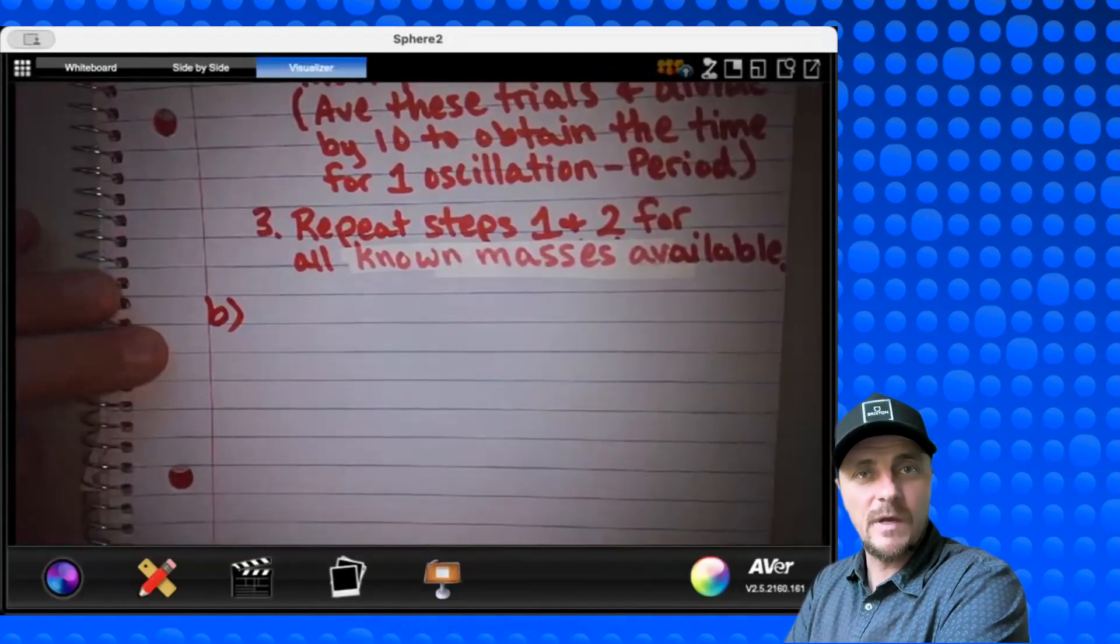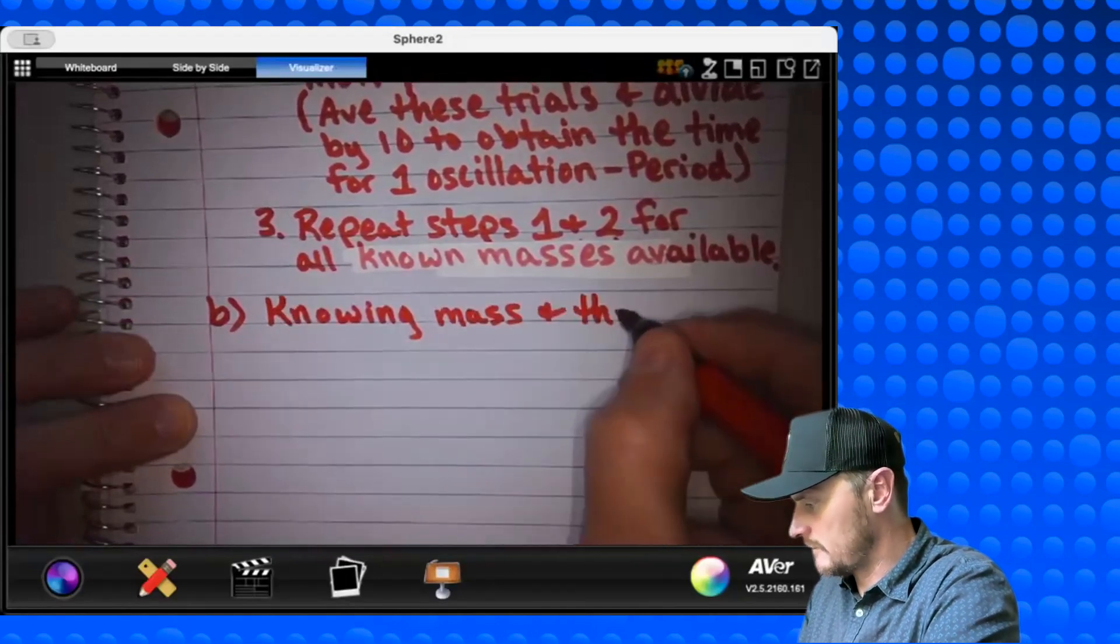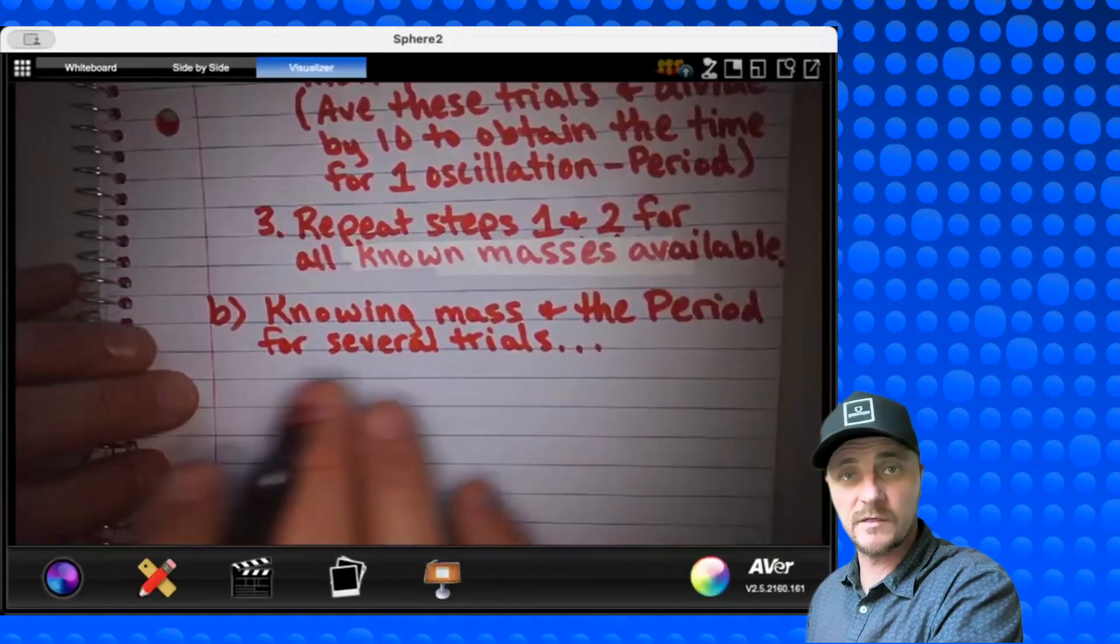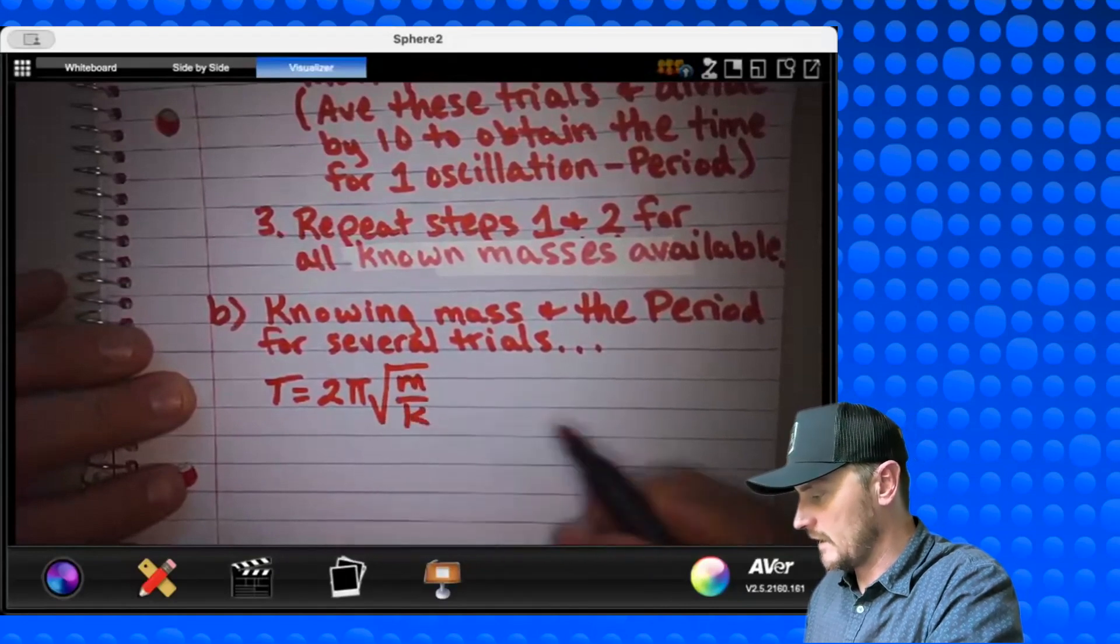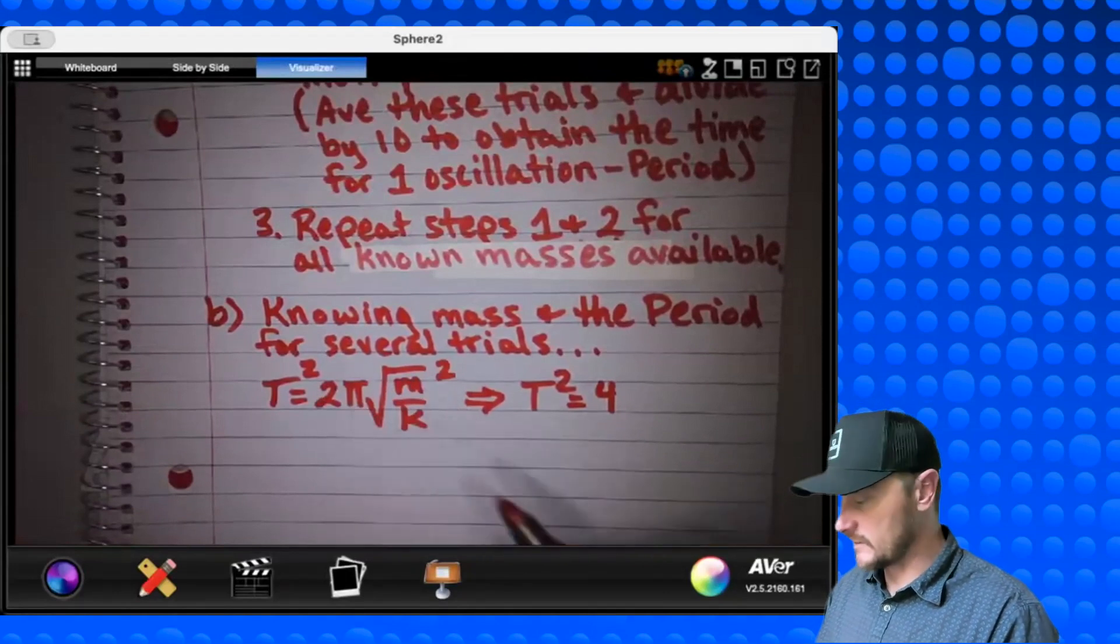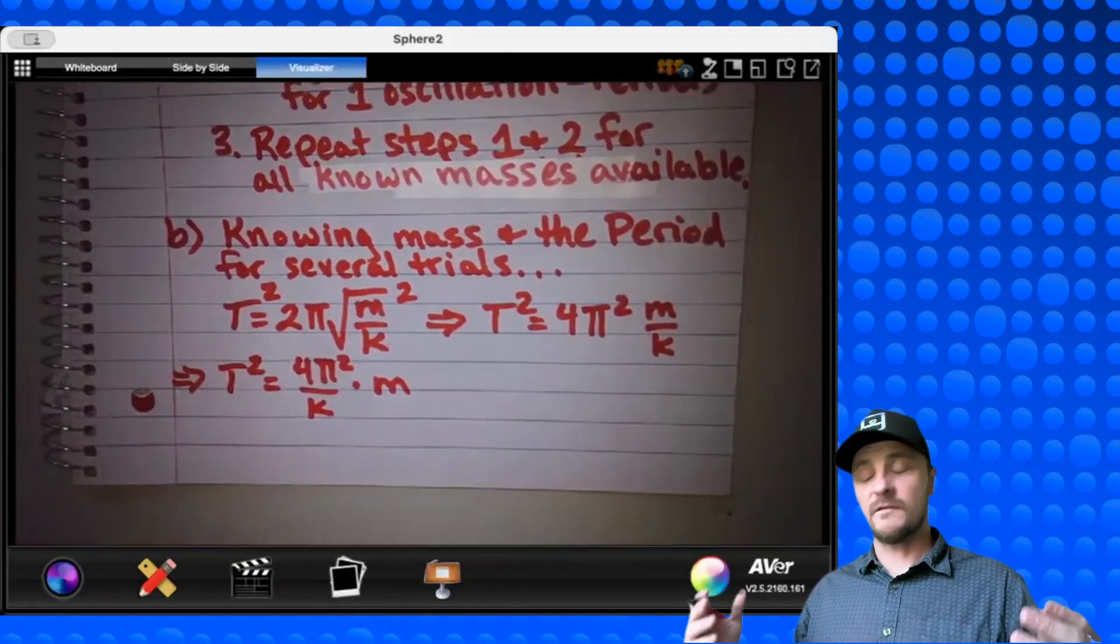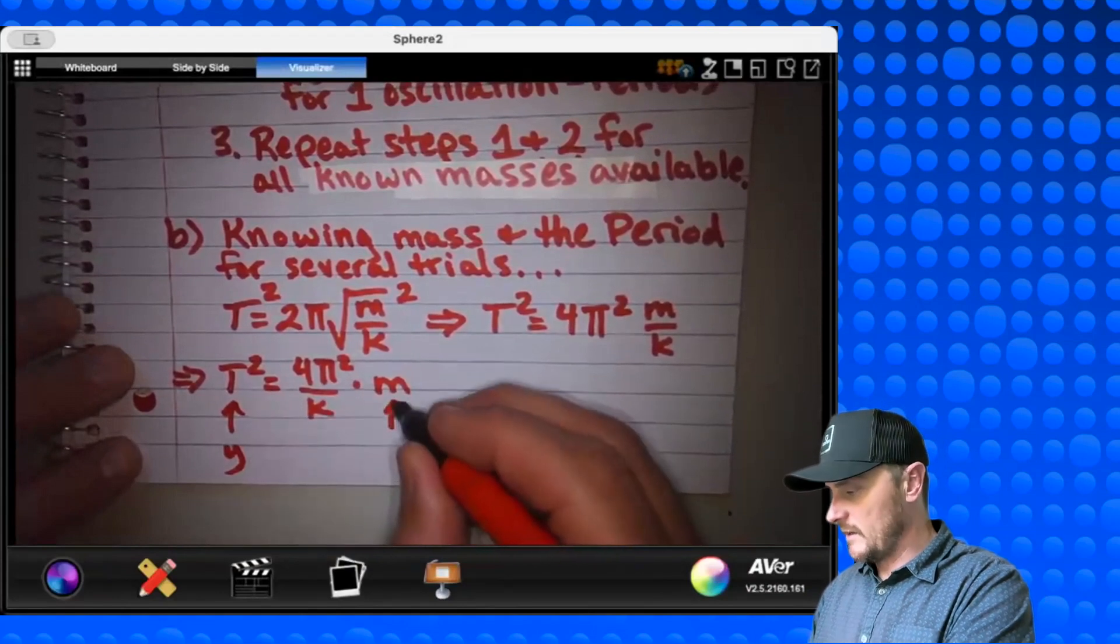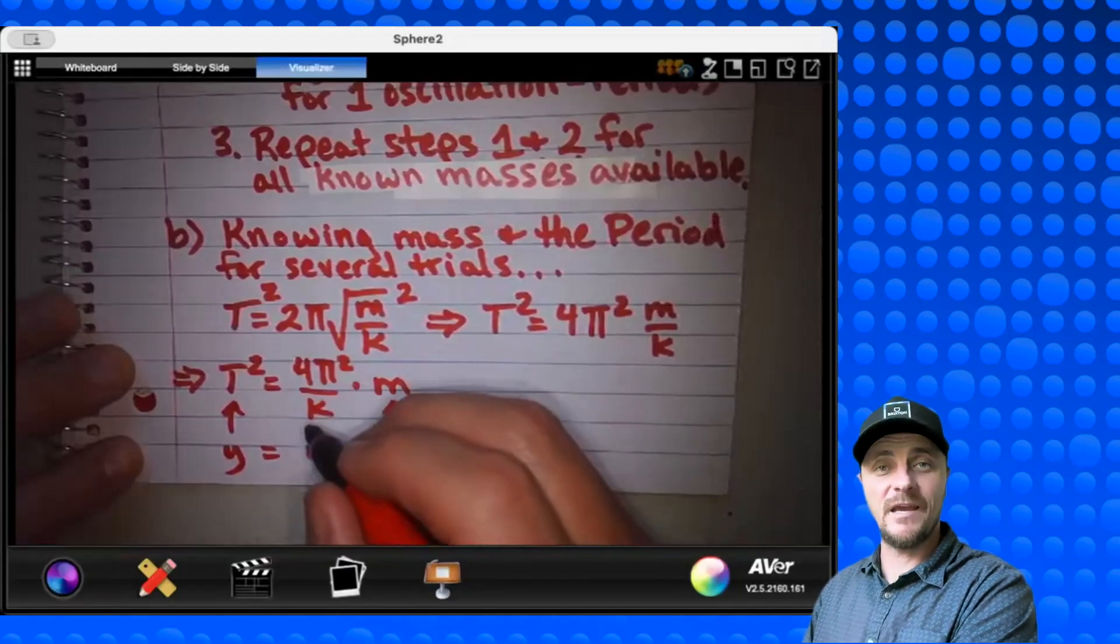So in part B, I'm just going to start with our equation and then we'll make a statement based on that equation. I'm going to say knowing mass and the period for several trials. And now I'm going to develop the equation that shows us what to graph. T equals two pi times the square root of M over K. Let's get K out of this square root by squaring both sides. Remember, you have to square that two and the pi. So you get four pi squared times M over K. And this statement should lead to this.